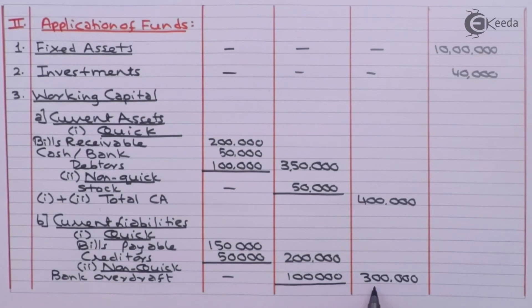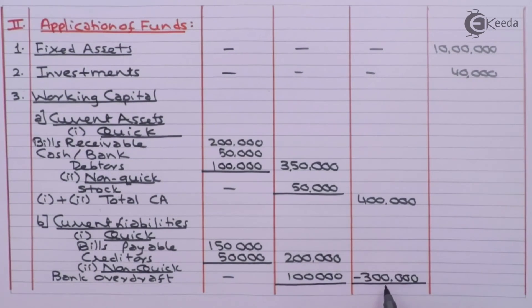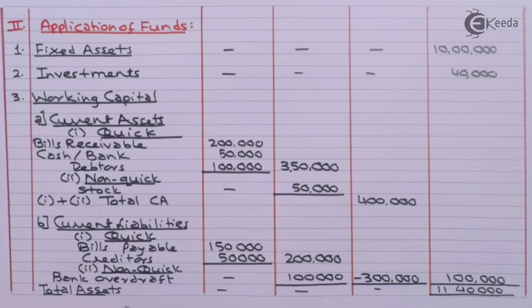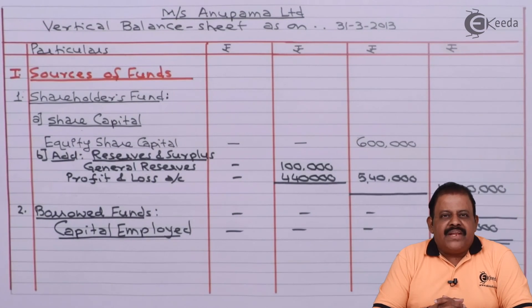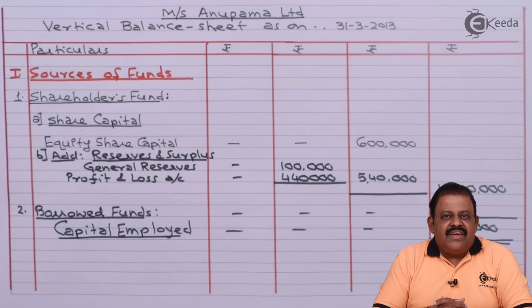Total current liabilities of 3 lakhs are deducted from total current assets of 4 lakhs, giving net working capital of 1 lakh. Adding fixed assets, investments, and net working capital: total application of funds is 11 lakhs 40,000. Sources of funds also equal 11 lakhs 40,000 — the balance sheet tallies. We learnt how to give effect to adjustments like closing stock, and how the net profit from the income statement as surplus is shown in the balance sheet.